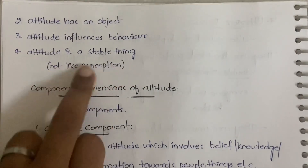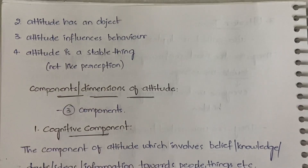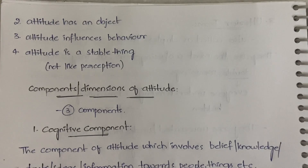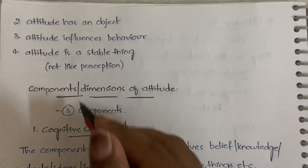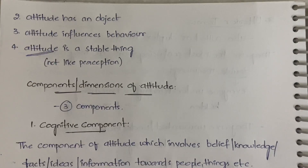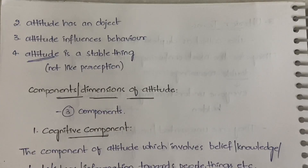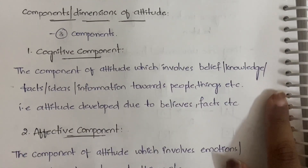Attitude is a stable thing — unlike perception, it does not change rapidly. Perception keeps changing based on the situation, the person, or your state of mind at a given point in time. But attitude is not like that — it is stable. Of course it changes, but not as quickly as perception does. Perception changes very rapidly, whereas attitude does not change that quickly.